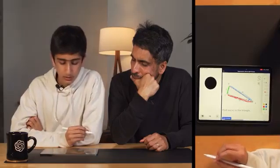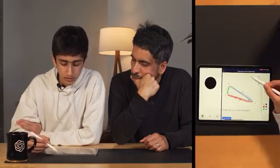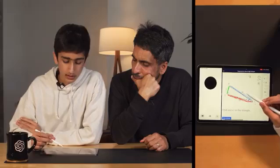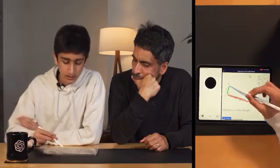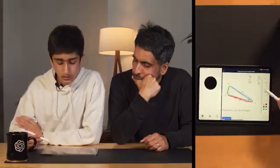Okay, so you told me that 7, this side BC, is the opposite side, and then you said that the hypotenuse is the longest side, so that would be this side AB, which is 25. So would the answer be 7 over 25?